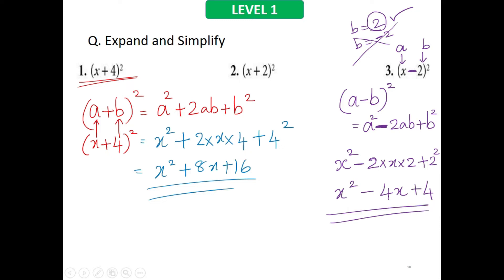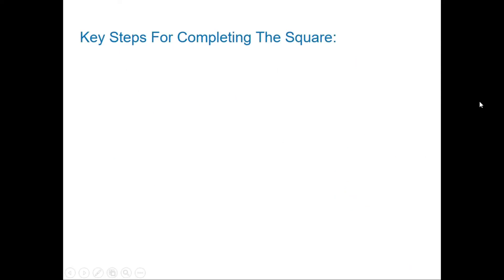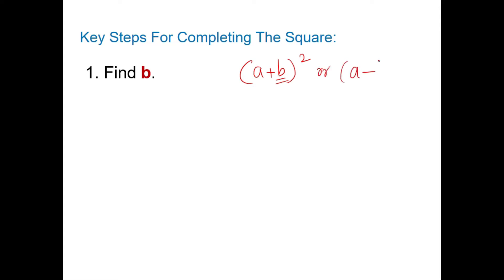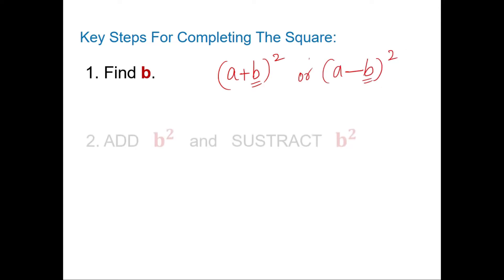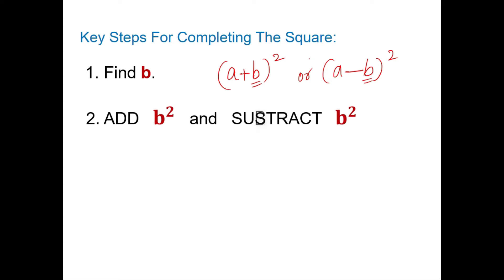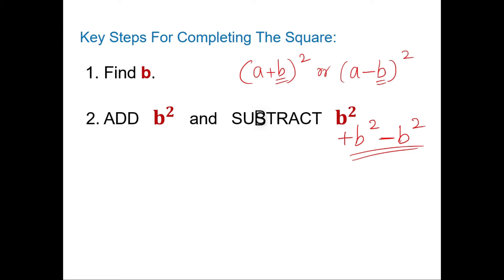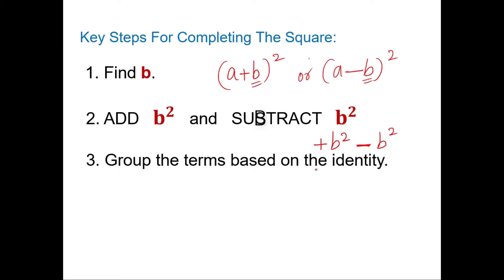This is how you apply the identity when expanding. Now our aim is to complete the square from given data. The key steps are: first, find b — the value that appears in a plus b or a minus b, the whole square. Second, add b squared and subtract b squared to keep the expression unchanged — the net effect is zero.